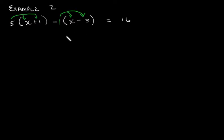We need to multiply 5 by x and we also need to multiply 5 by 1. And then what's important to note here is that there's a negative in front of the bracket but it's actually a negative 1 which we need to multiply into the bracket.